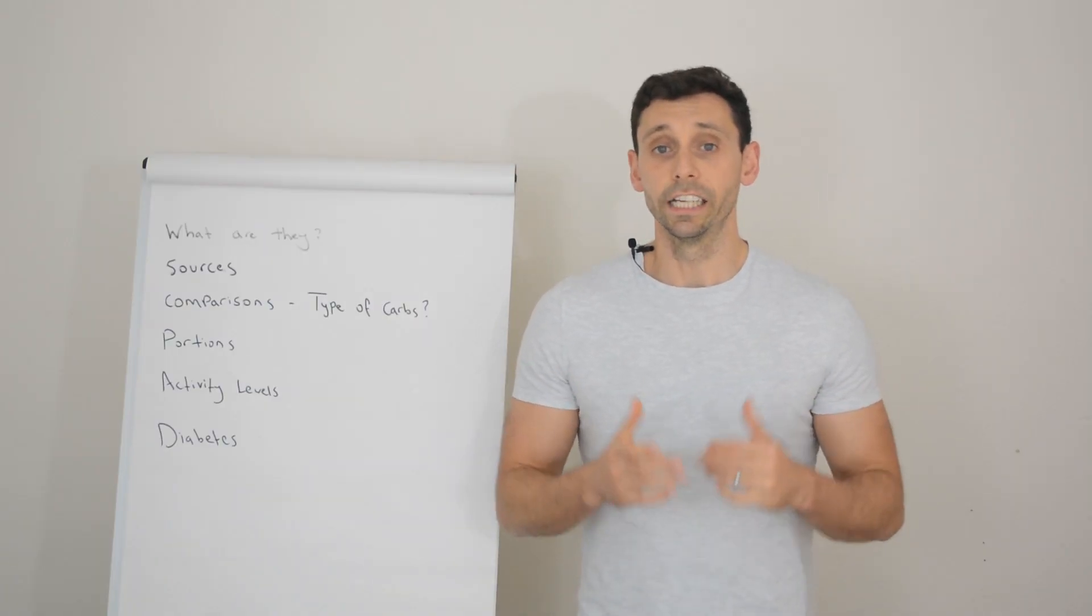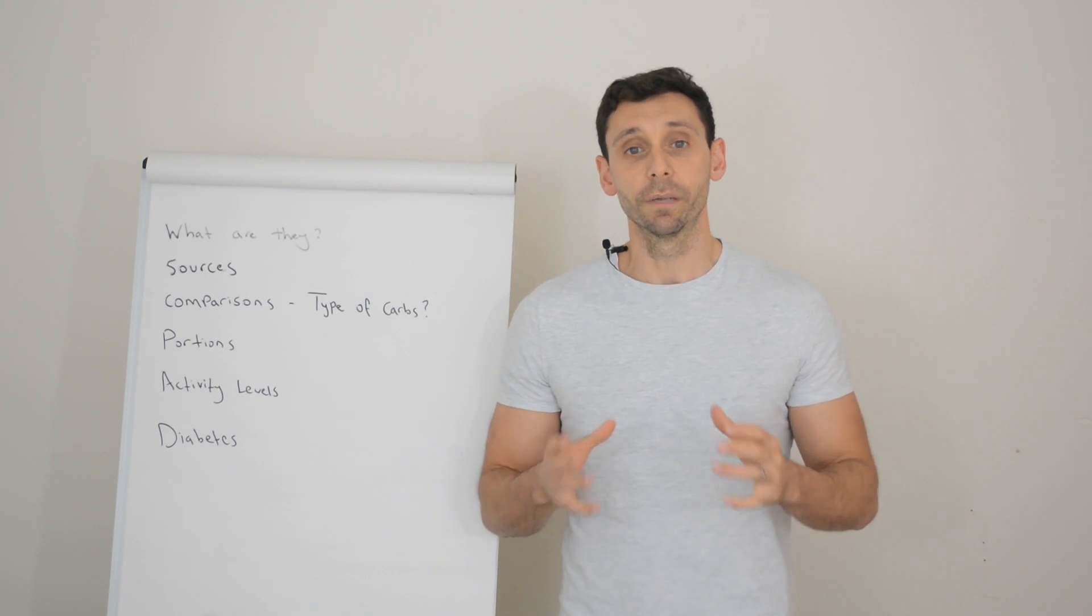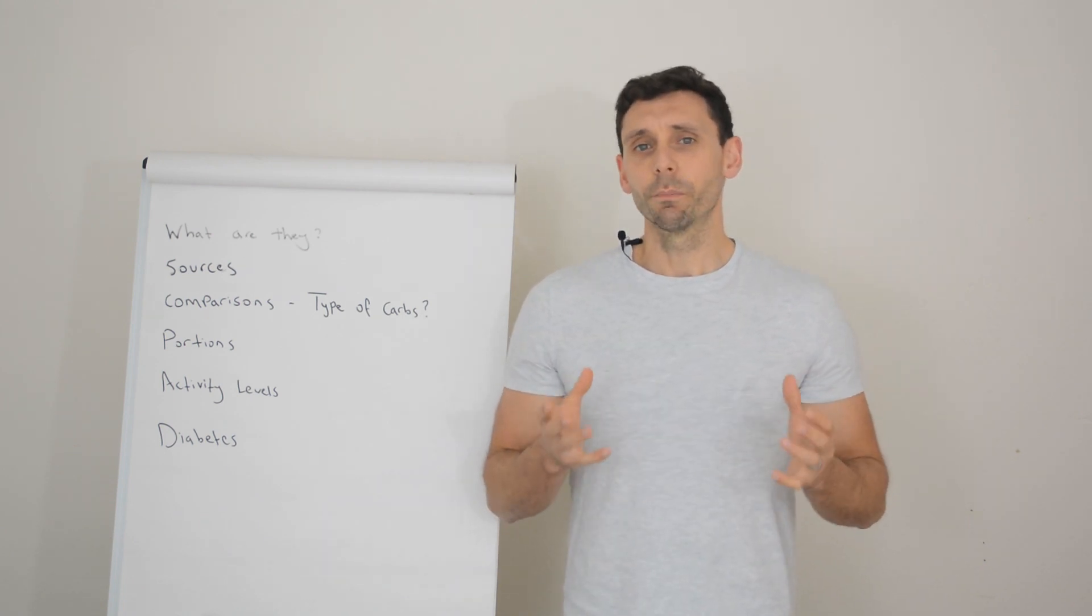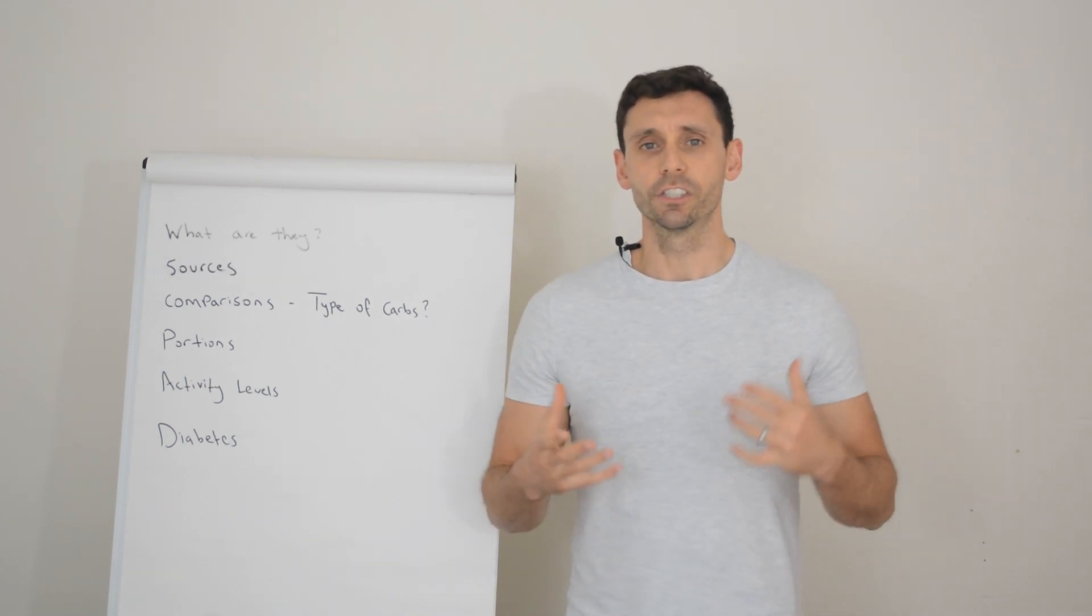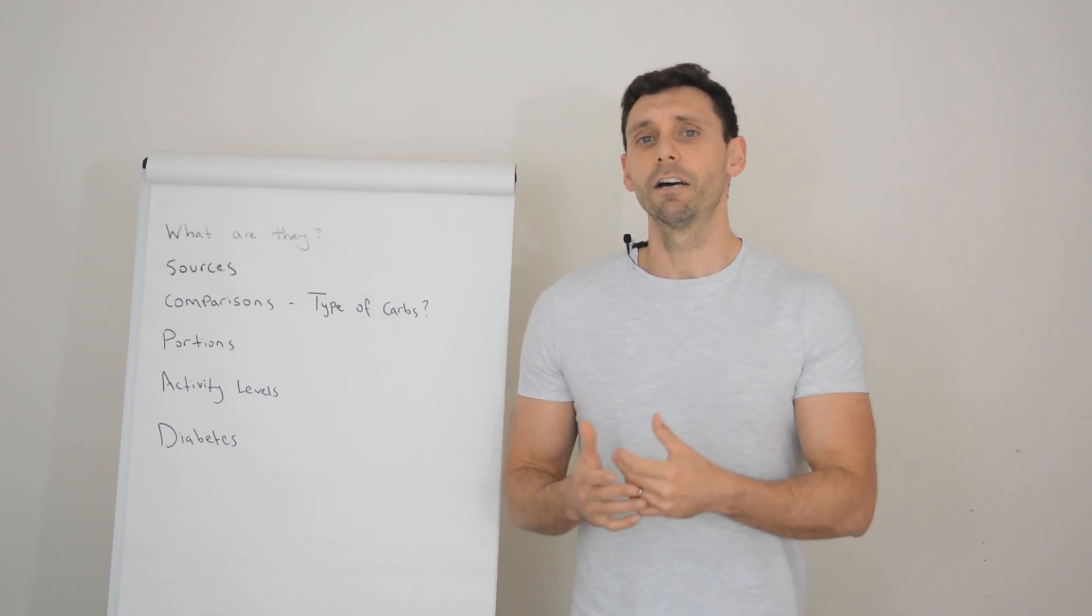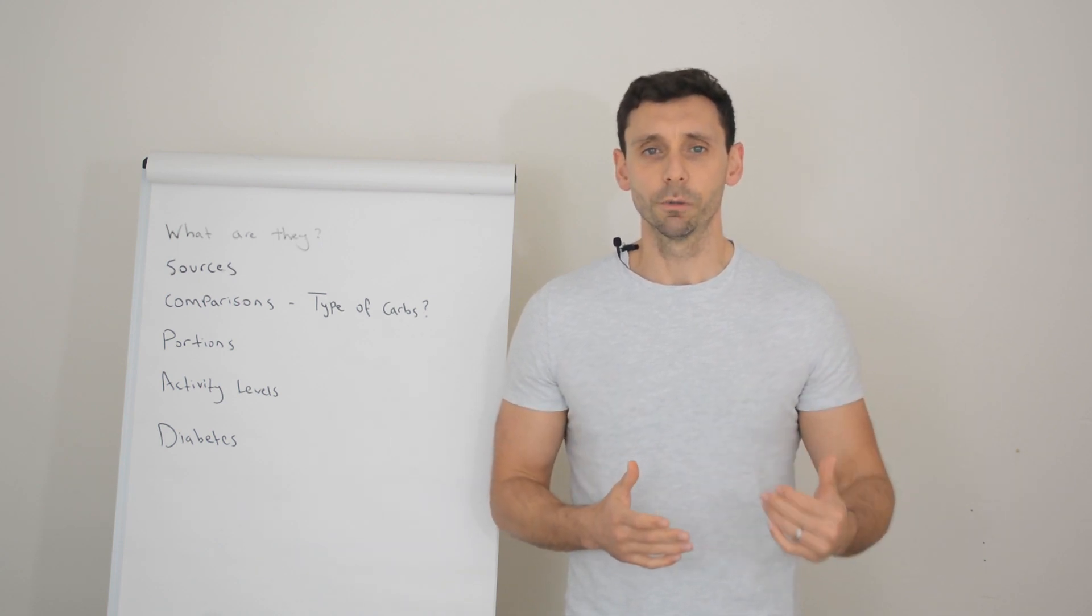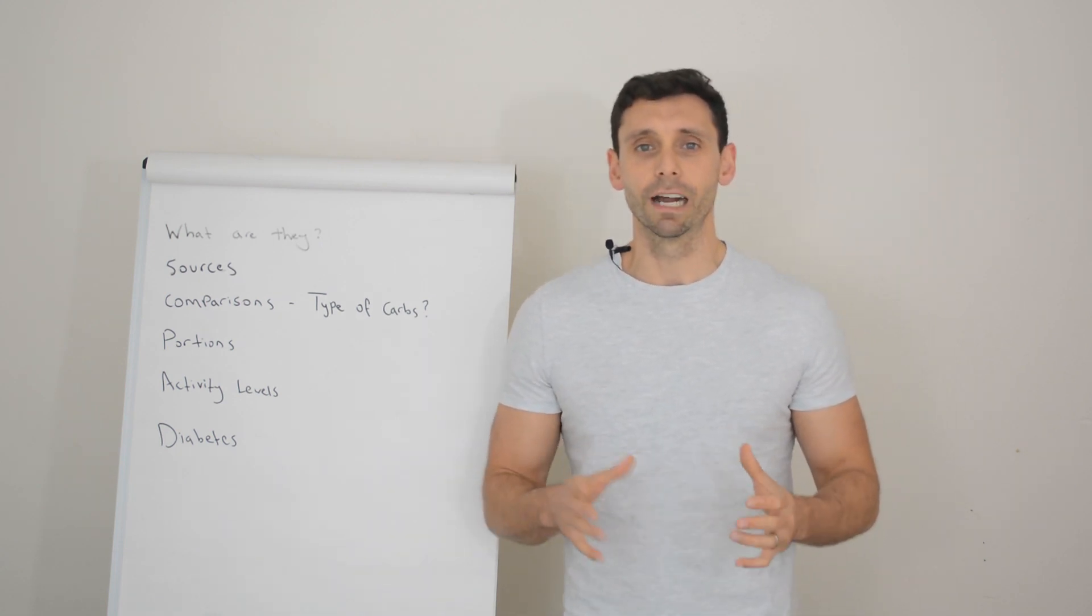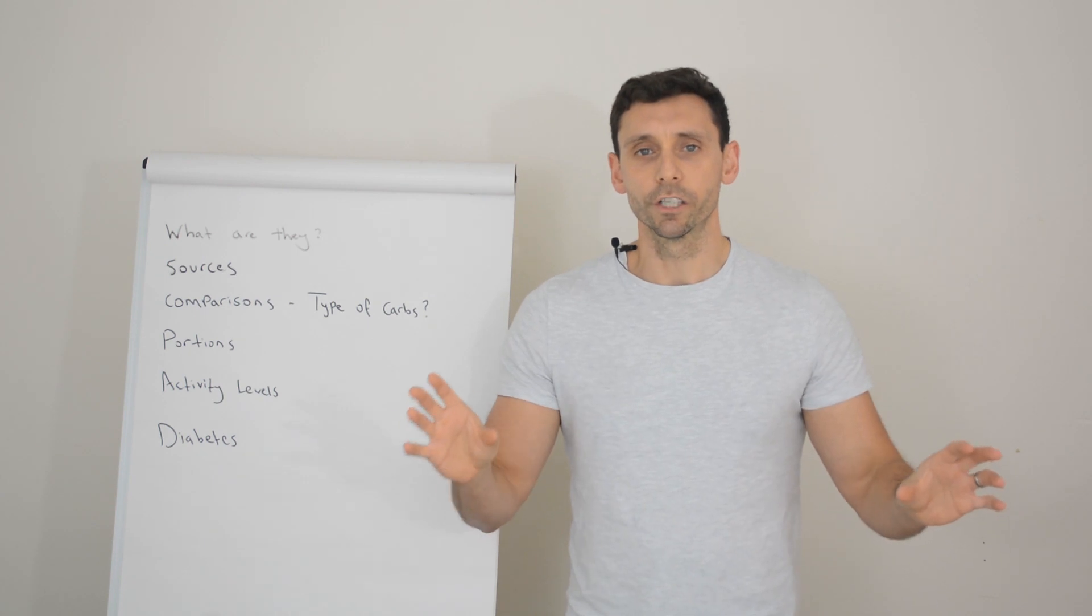When we look at the guidelines in the UK, it says that we should be aiming for around 50% of all our calories coming from carbohydrates, which actually when we start to think about it stacks up. Because if you're going to have 2000 calories per day, which is generally the recommendation for a UK adult, then that's going to equate to around 1000 calories coming from carbohydrates, which loosely works out around 250 to 280 grams per day, which is referenced in the UK guidelines.